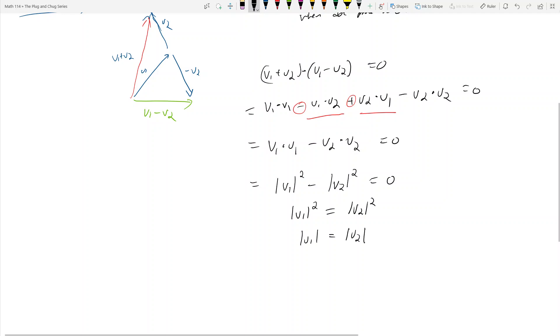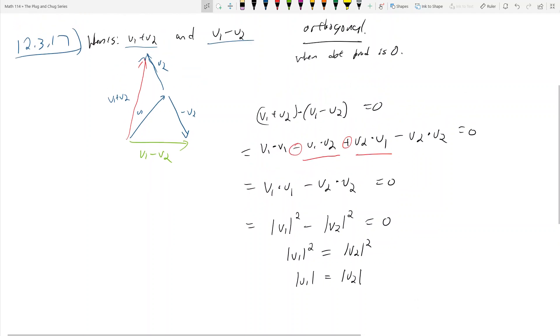What does this mean? This means that the sum of two vectors, V1 plus V2, and the difference of two vectors, V1 minus V2, this red guy and this green guy, are going to be orthogonal if the magnitude of V1 is equal to the magnitude of V2.